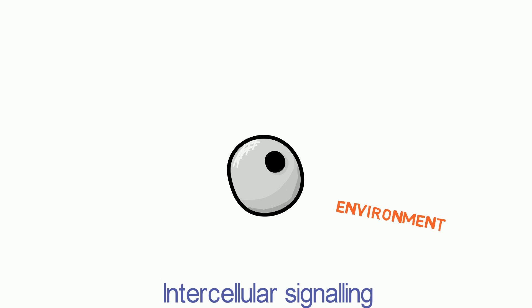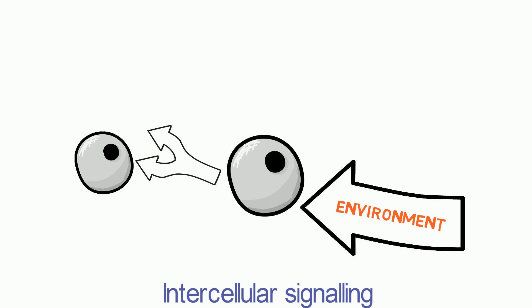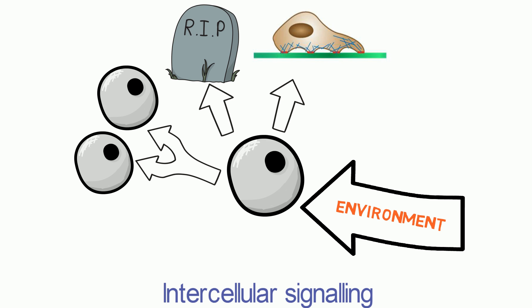Cell communication is important for a cell to sense and respond to its surroundings. This includes cellular activities such as cell growth and division, cell death, cell adhesion, and differentiation into specialized cell types such as brain and liver cells.